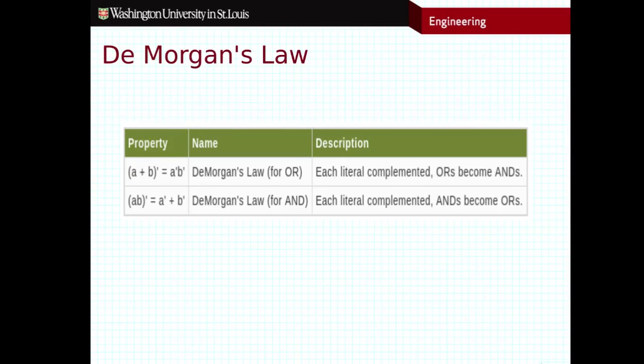DeMorgan's Law states that if I have a statement that says A or B, or any statement that involves ORs, what I can do is change that OR to an AND. So this OR that I see here can be changed to an AND. But in order to do that, what I need to do in order to flip this from an OR to an AND is complement each of the values on either side. So we see A becomes A' and B becomes B'.